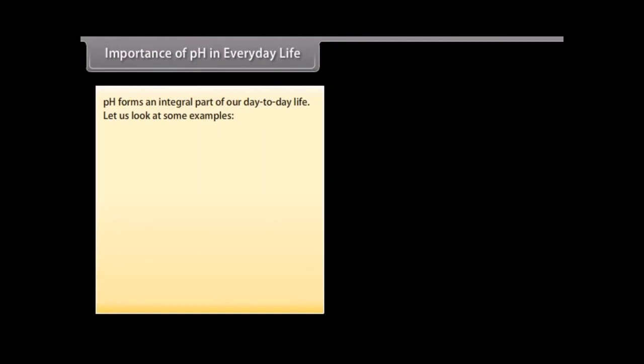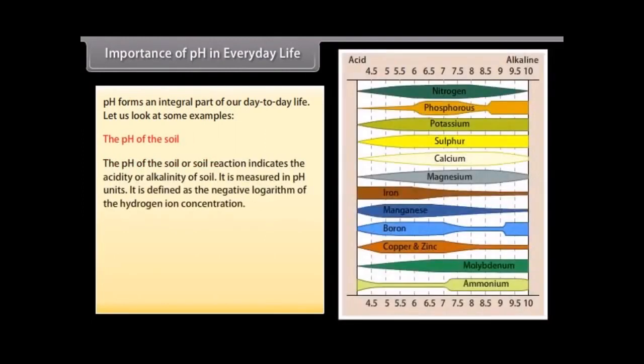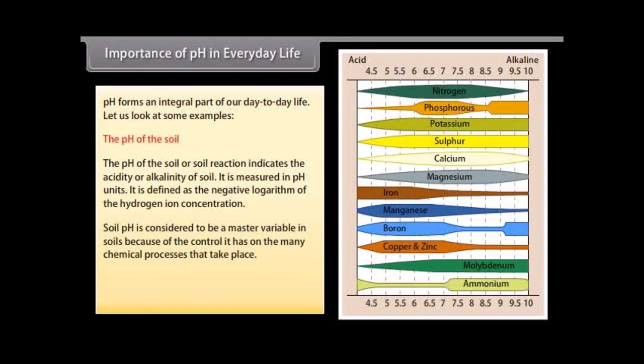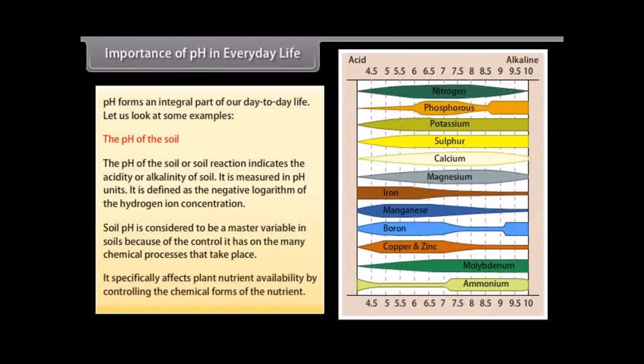Importance of pH in everyday life. Let us look at some examples from our day-to-day life where pH forms an integral part. The pH of the soil: The pH of the soil or soil reaction indicates the acidity or alkalinity of soil. It is measured in pH units. It is defined as the negative logarithm of the hydrogen ion concentration. With the increase in the amount of hydrogen ions in the soil, the soil pH also increases leading to being more acidic. Soil pH is considered to be a master variable in soils because of the control it has on the many chemical processes that take place. It specifically affects plant nutrients availability by controlling the chemical forms of the nutrient.